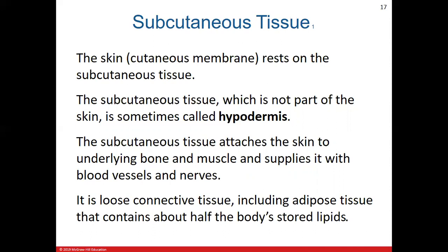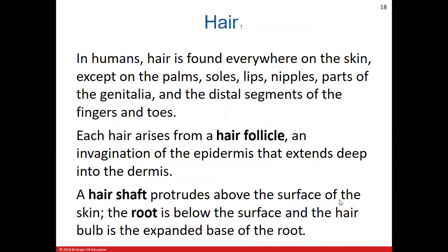The last part of the diagram covers the subcutaneous tissue. Remember this is technically not part of the skin — the skin is also called the cutaneous membrane, so subcutaneous means below the skin. It's also referred to as the hypodermis, meaning lower than the dermis. Its basic function is to attach the skin to what's underneath — basically the bone and muscle layer. It's made of connective tissue, mainly loose connective tissue, which also includes adipose tissue.